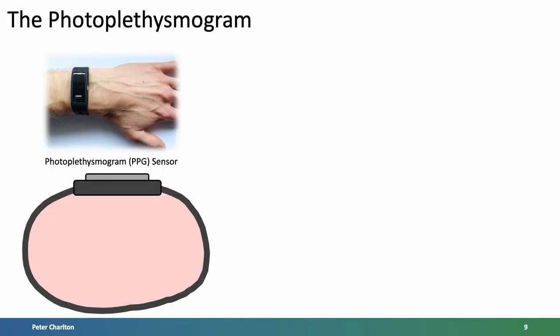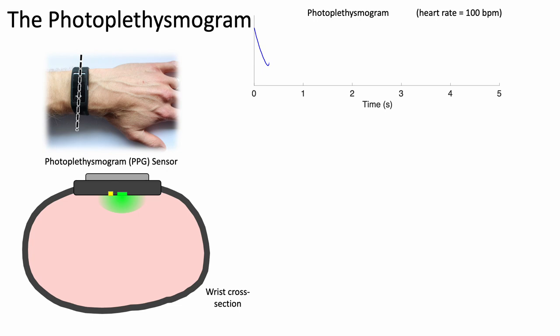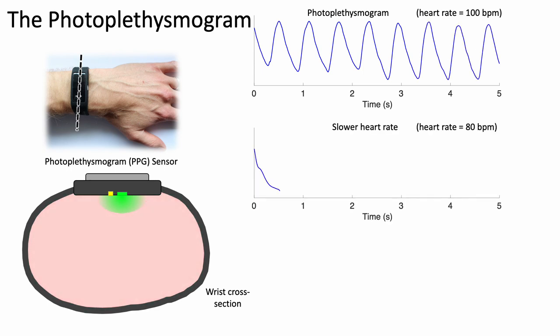The photoplethysmogram is measured using a sensor, in this case at the wrist, which taking a cross section through the wrist, shines light onto the surface of the skin and uses a light sensor to measure the amount of light reflected back from the skin, and then measures the photoplethysmogram signal which exhibits a pulse wave for each heart beat. Here's an example at a slower heart rate. So as the blood enters and leaves the circulation with each heart beat, this produces a pulse wave.